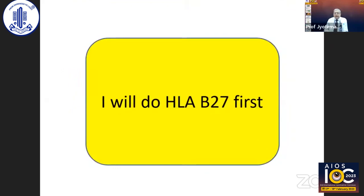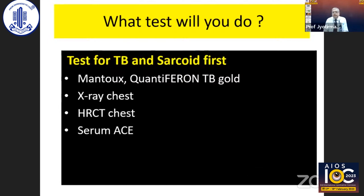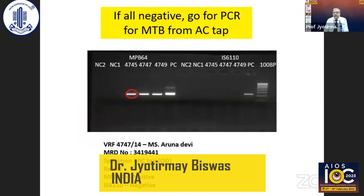In a scenario where a 30-year-old man has not much pain or redness but has mutton-fat keratic precipitates, in a country like India I should do TB and sarcoid workup first — Mantoux, Quantiferon TB-Gold test, X-ray chest, possible high-resolution CT chest, and serum angiotensin-converting enzyme to rule out sarcoid. TB and sarcoid to be ruled out first. If negative, go for PCR for Mycobacterium tuberculosis from AC tap. In this particular case, AC tap was positive for Mycobacterium tuberculosis DNA.